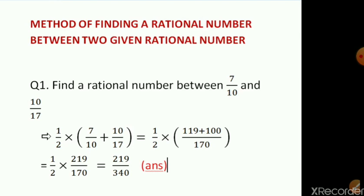Taking the LCM of the numbers in the bracket, 10 and 17, that is 170, and converting each of the rational numbers into equivalent terms. 7 by 10 has to be multiplied with 17, so we get 119. 10 by 17 has to be multiplied with 10, so the number we get is 100. On adding these two we will get 219 upon 170.